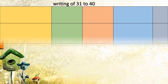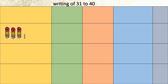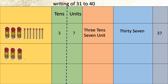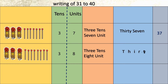Next: 3 tens and 7 units — number formed is 37, and 30 and 7. Next number, we are going to add one more stick, so we got 3 tens and 8 units — number is 38, and in numerals 30 and 8.